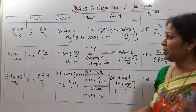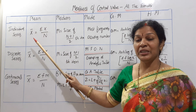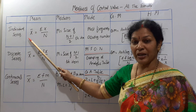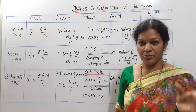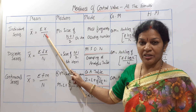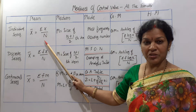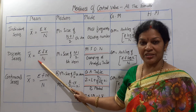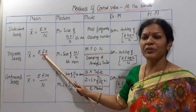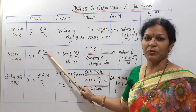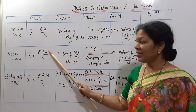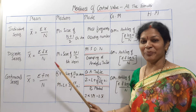Say along with me — it will be easy to remember. Mean: in individual series, X̄ = Σx/n. Only X is given; Σ means total, so Σx/n. When it comes to discrete series, it is Σfx/n — same as individual but we are multiplying X with frequency f, giving Σfx/n.